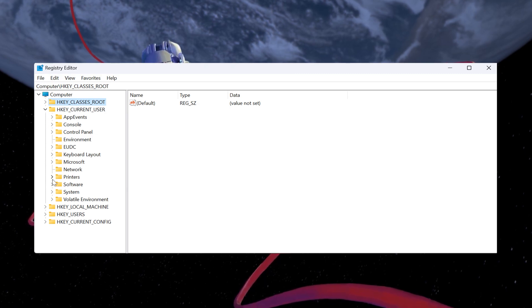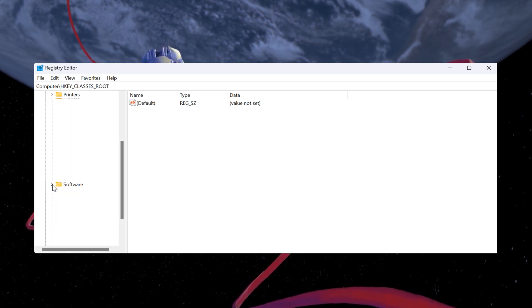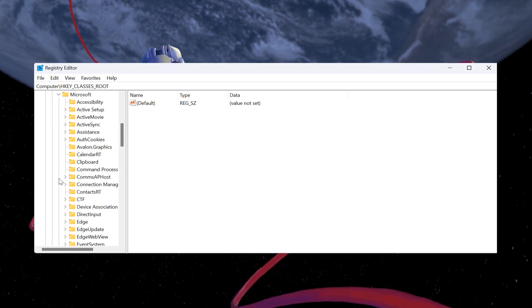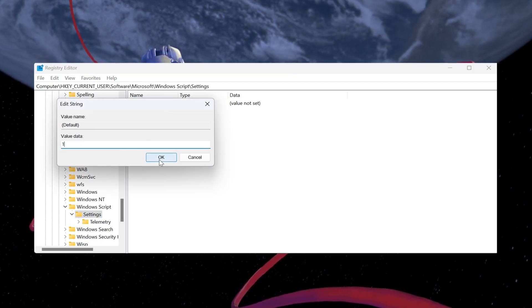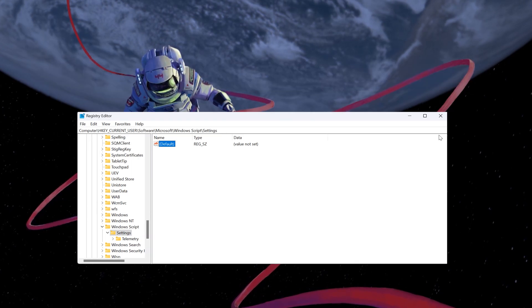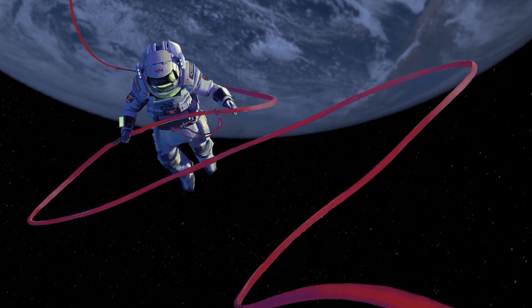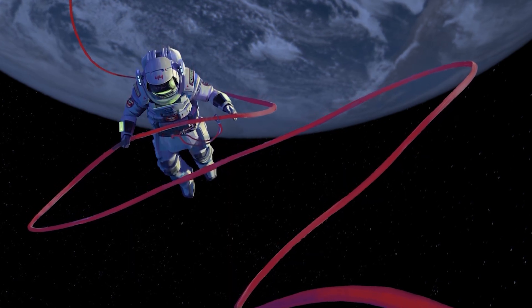HKEY Current User Software Microsoft Windows Script Host Settings. In the right pane here, set the value data to 1 and click on OK. Close the Registry Editor and restart your computer to see if the error persists.